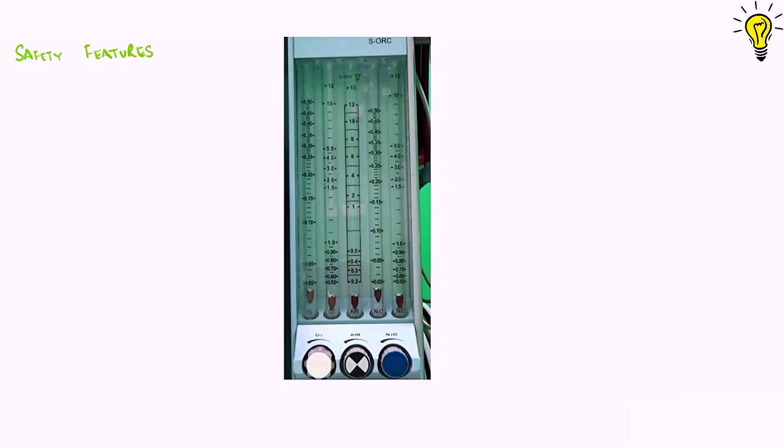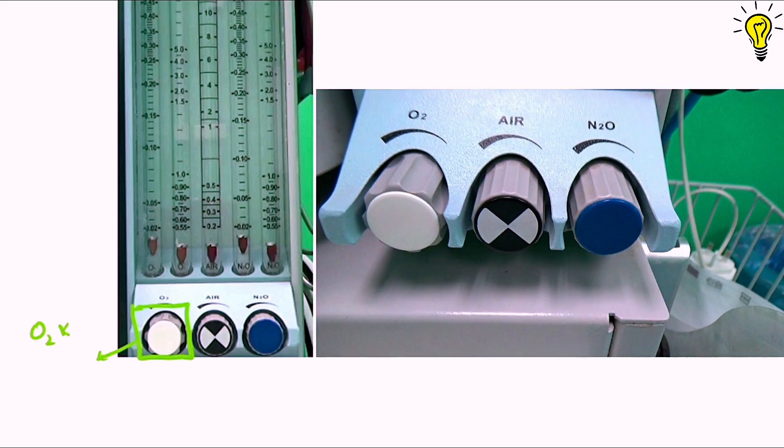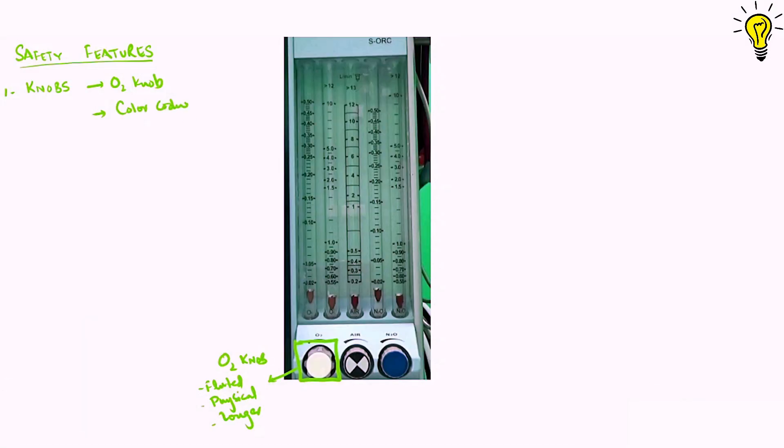Now coming to the safety features of flow meters. Number one, the knobs. Each gas knob has different physical properties. Oxygen knob is characteristically longer, fluted and its grip is different, so that you don't make a mistake while opening wrong gas. Next, these knobs are color coded. White for oxygen, black and white for air, blue for nitrous as per the standard color codings. Thirdly, these knobs have shields that prevent them from moving inadvertently.